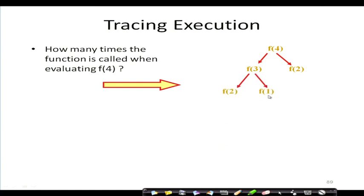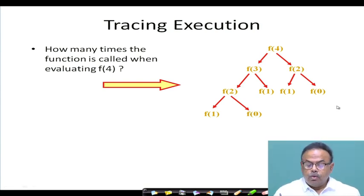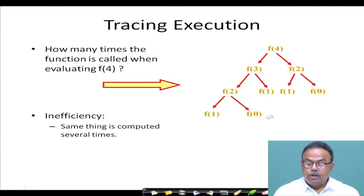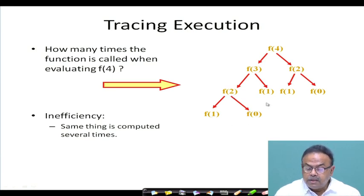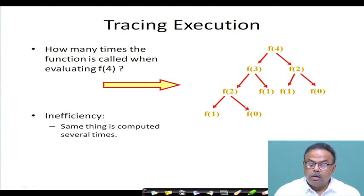To solve F(3), I need F(2) and F(1). To solve that F(2), I need F(1) and F(0). And the other F(2) also needs F(1) and F(0). Now I know F(1) is 1 and F(0) is 0, so F(2) = 1+1 = 2. I go on adding them and ultimately get F(4).